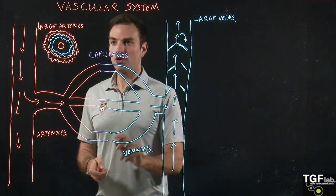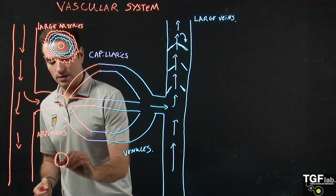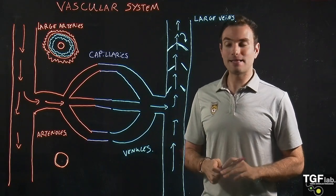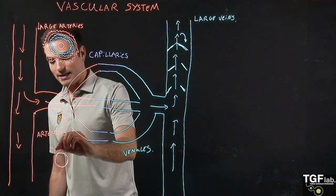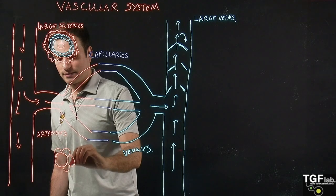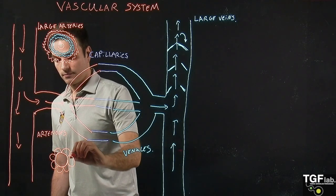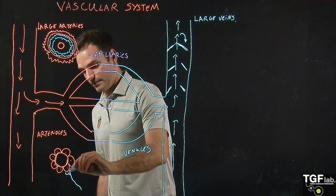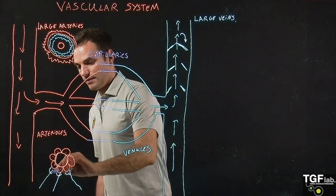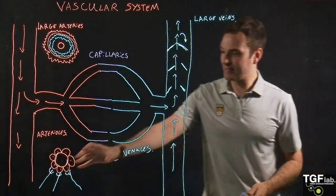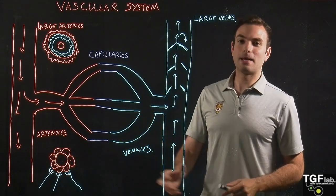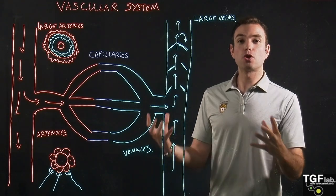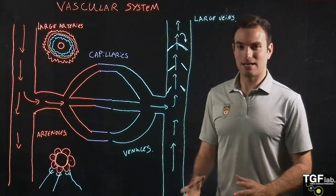Then we have the arterioles. The arterioles have a lumen of similar size and a very thin layer of endothelial cells. What is very important about the arterioles is that they have a powerful layer of smooth muscle cells that are innervated by the autonomic nervous system. These nerves can direct the arterioles to contract or dilate, reducing or allowing blood flow into the tissues for gas exchange.